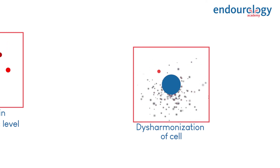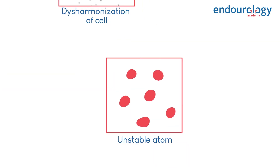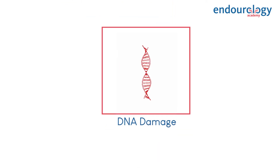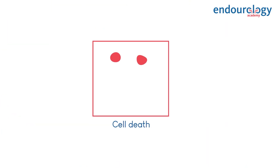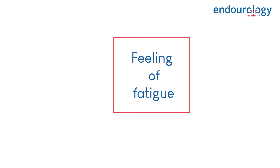This damage to atomic structure in the cells leads to unstable electrons and damaged DNA. Once the cell's DNA is damaged, the body's defense mechanism attempts to repair the cell. During the attempt to repair the cell, cellular death often occurs. Too many cellular deaths lead to general feelings of malaise and fatigue.